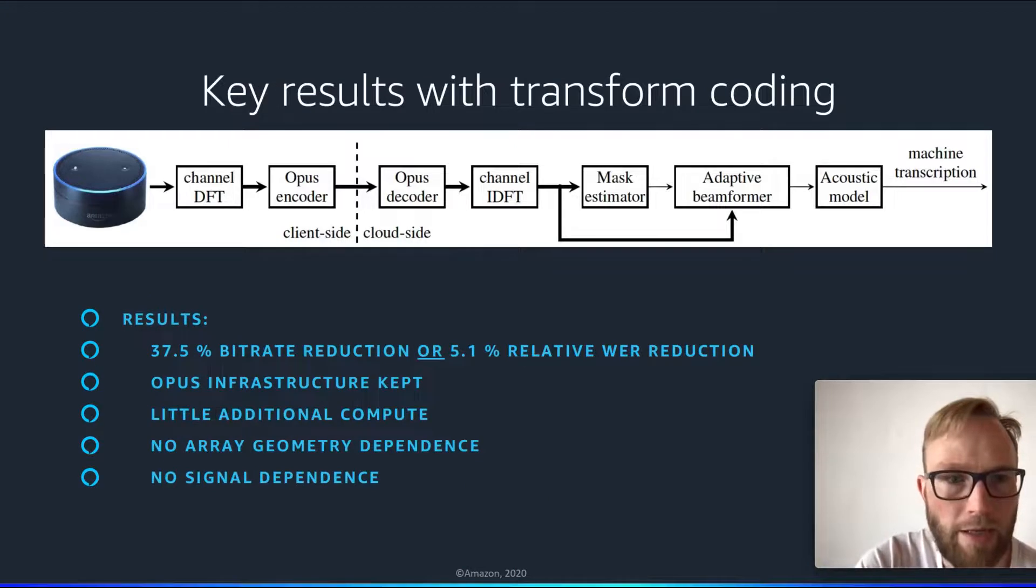The key results are that we can reduce the bitrate by more than 30% just by introducing this additional transform coding. Or alternatively, we can reduce the word error rate by 5% relative without increasing the bitrate. We have the advantage that we can stick with the Opus infrastructure while adding little additional compute and still maintaining array geometry independence as well as signal statistics independence.